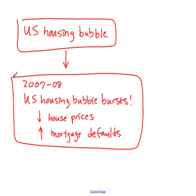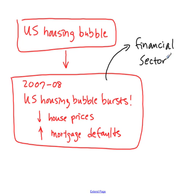But these started to go sour as well because house prices fell and people stopped paying their mortgages at rates much higher than expected, and none of the money could be recouped because you could not sell back the house to make the money you had lost. Mortgage-backed securities and other mortgage real estate-based investments became toxic assets, which had very strong impacts on two sectors: the financial sector and the rest of the economy.